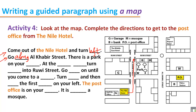There is another piece of information: there is a park on your — we have to decide where the park is. This is the park on the map. When you go along Al-Khabir Street, the park will be on your right. After the park, there are some traffic lights.